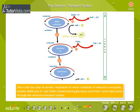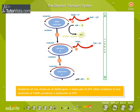Oxidation of one molecule of NADH gives three molecules of ATP, while oxidation of one molecule of FADH₂ produces two molecules of ATP.